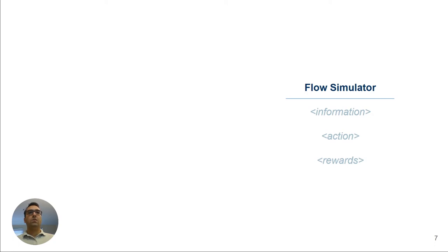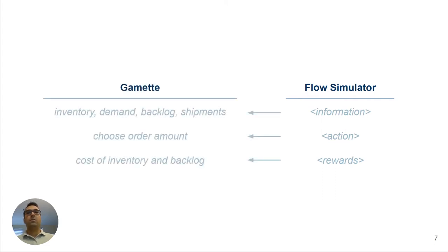In this study, we considered the drug delivery supply chain as a decision context. So we basically modeled an inventory management task, where information maps to inventory, demand, backlog and shipments data, action maps to choosing an order amount, and rewards, here negative rewards, map to inventory and backlog costs.